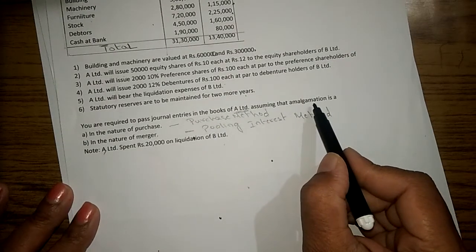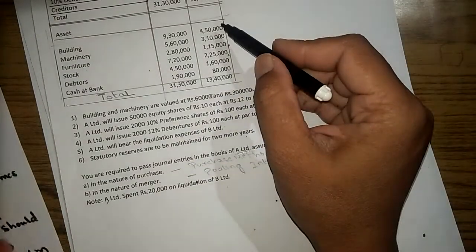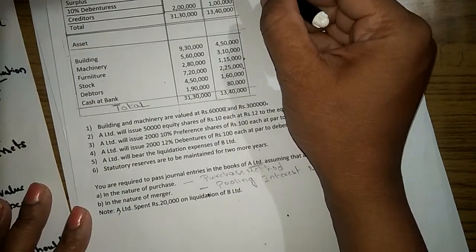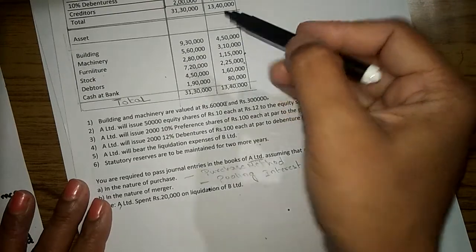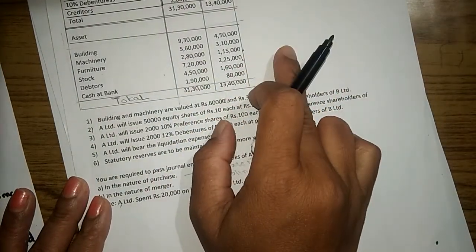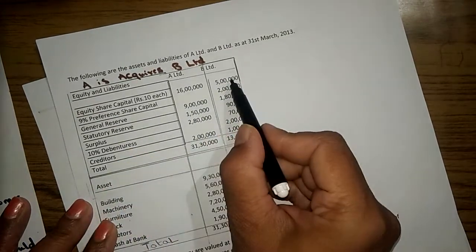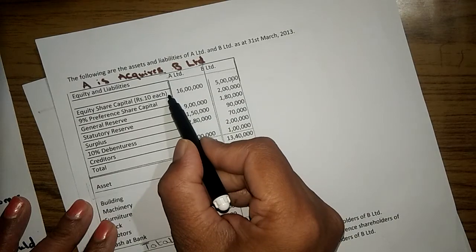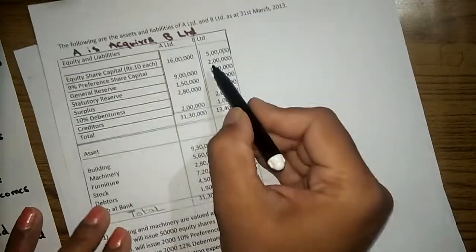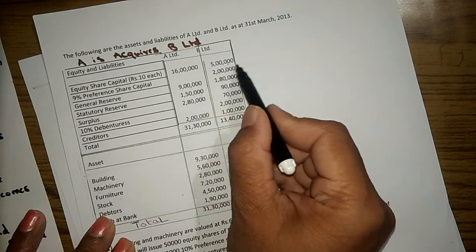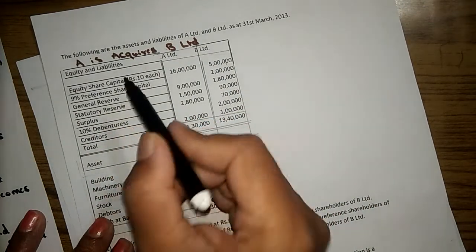Let's pass the journal entry assuming that amalgamation is in the nature of merger. According to those five conditions, all assets and liabilities of the selling company after amalgamation become the assets and liabilities of the purchasing company. That's the first condition. Second condition: at least 90 percent of equity share capital of selling company should become the shareholders of the purchasing company. Third condition: the purchase consideration to the shareholders has been discharged in equity shares, so that condition is also fulfilled.